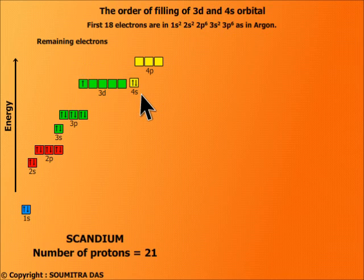Since the last electron goes to the 4s level, therefore while ionization the 4s electron will go out first.